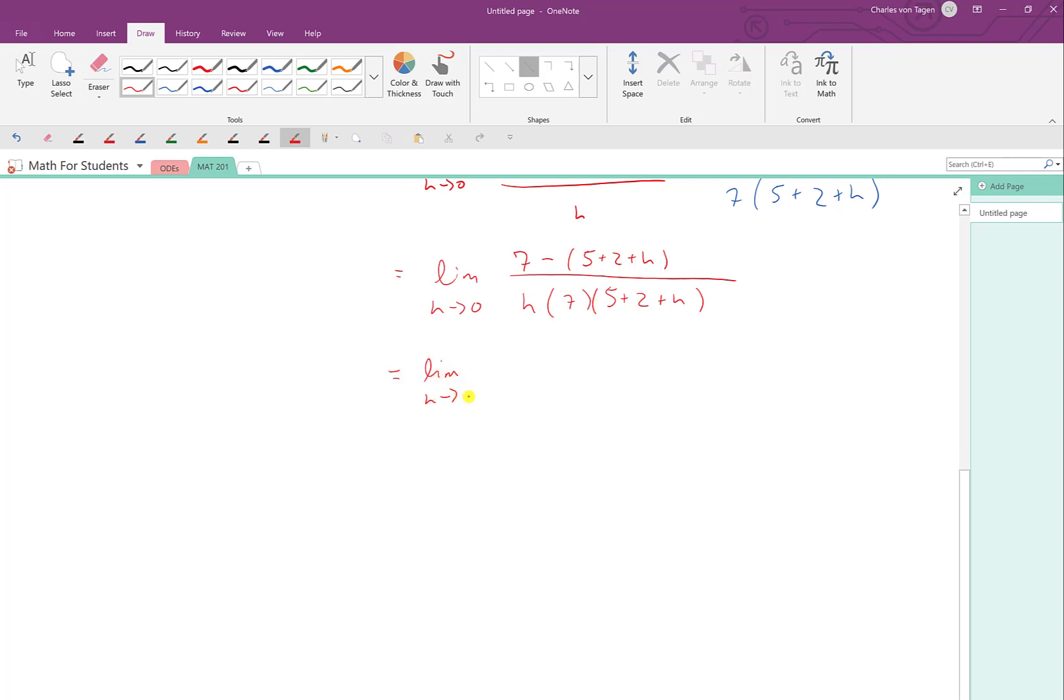I'm going to just have to clean this up, so let's do some distributing upstairs. So we get 7 minus 5 minus 2 minus h, all over 7h times 5. Actually, we can simplify that. That's 5 plus 2. Well, that's 7 plus h.